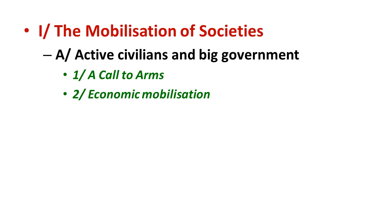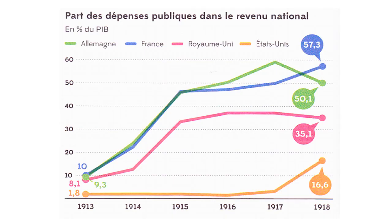We can see on this graph how much the share of public spending — money spent by the government — in the national GDP increased in the countries that fought the war. Germany, France, and the UK all saw a sharp rise in their national spending, while the USA started to do the same when it joined the war at the end of 1916.